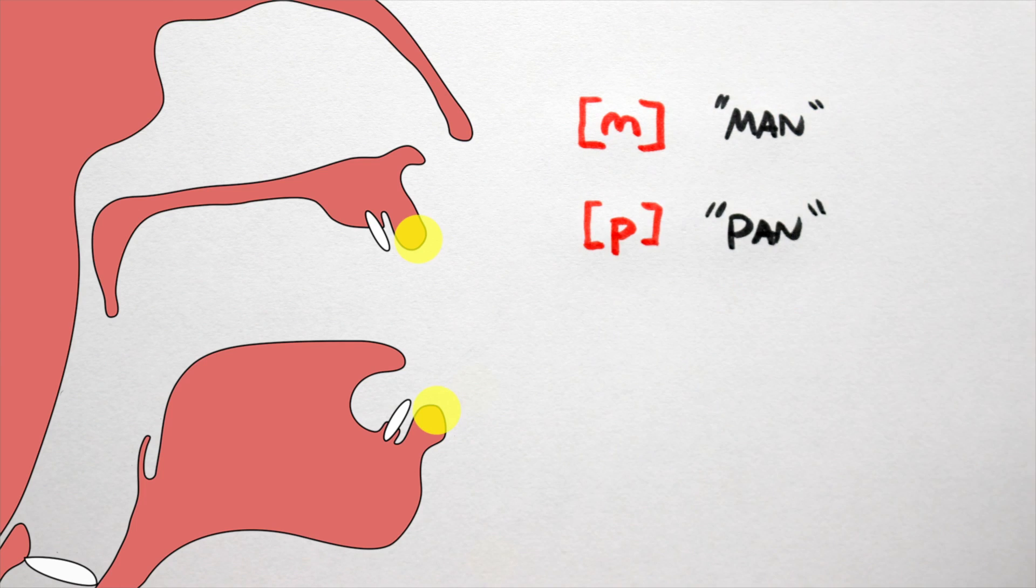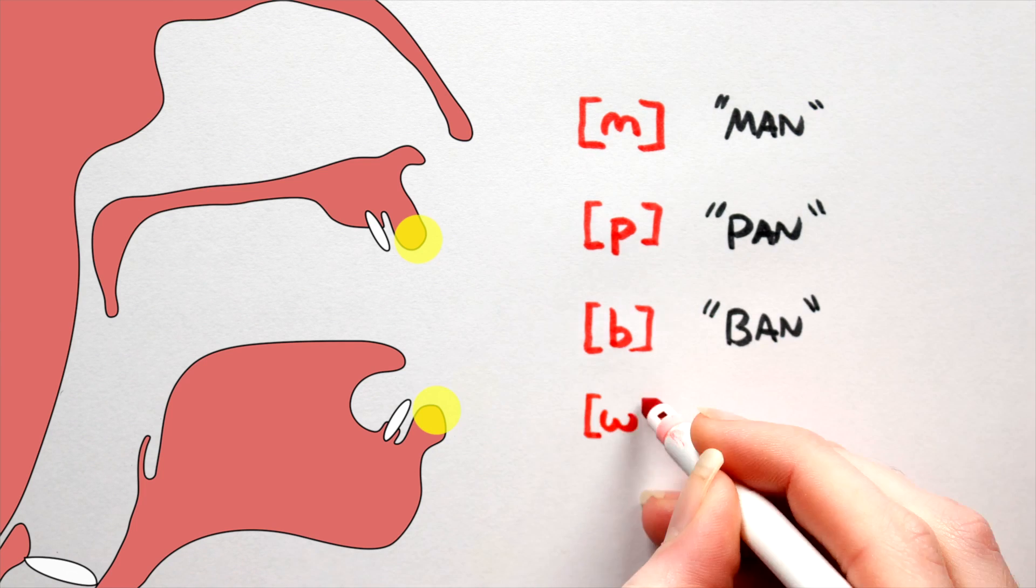Number one, bilabial. Here, the obstruction is created using both the upper and lower lips. In English, we have four-ish bilabial consonants: ma as in man, pa as in pan, ba as in ban, and wa as in water.